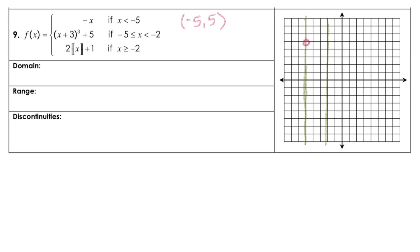We can go back 1, up 1, back 1, up 1, and that generates our line. Now moving to the middle portion — that one is a cubic. We plug in negative 5 and end up with negative 2 cubed plus 5, which gives us negative 3. So I have (negative 5, negative 3), and that's a closed circle.